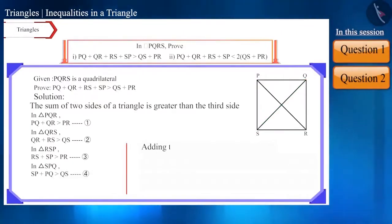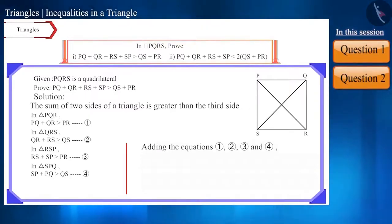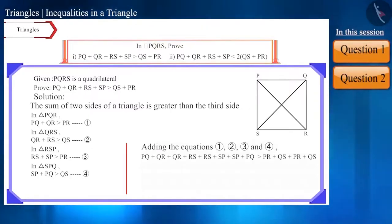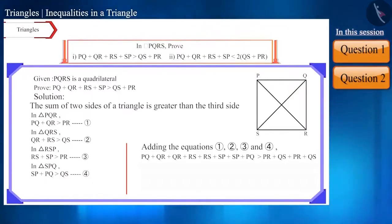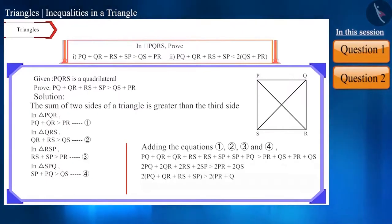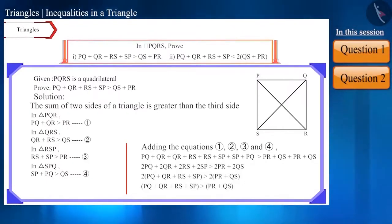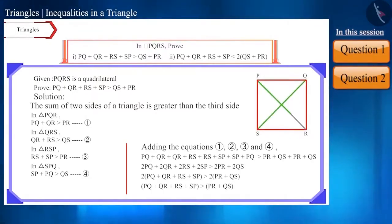Now, if we add all four inequalities and simplify the left side and the right side, we get the result. Thus, we have proved that the sum of the four sides of quadrilateral PQRS is greater than the sum of its diagonals.